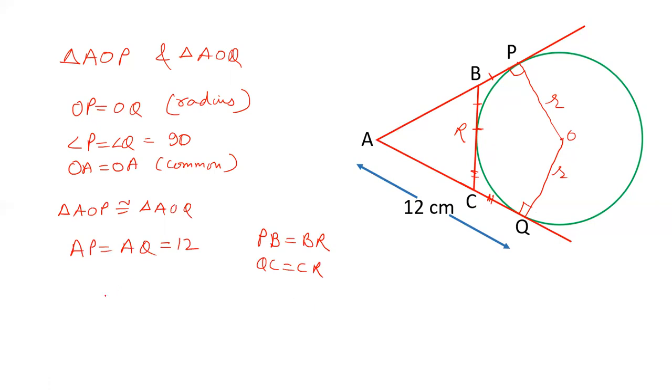Now the perimeter of triangle ABC is AB plus BC plus AC. AB is AB. Let's write BC as BR plus CR. Now BR is equal to PB, and CR is equal to QC.